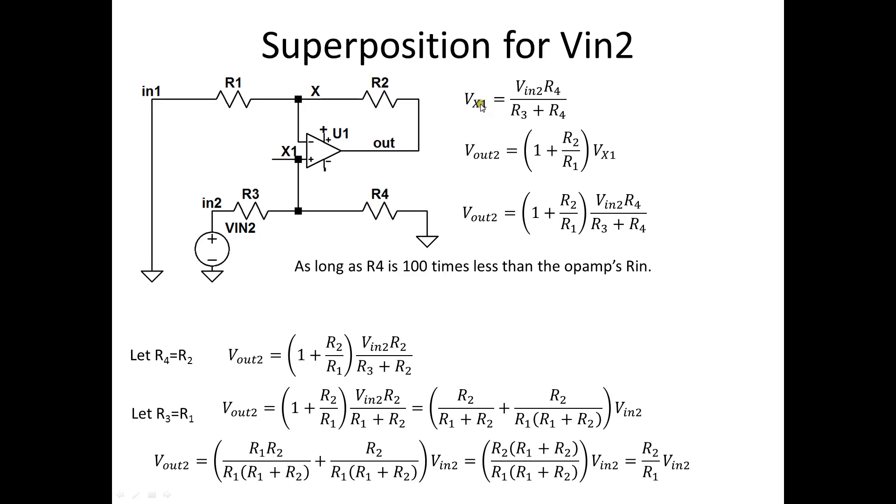Alright, now we'll do superposition for VN2. Looks slightly more complicated. But again, at this node voltage, it's just the voltage division. R4 divided by R3 plus R4. And so, Vout is just 1 plus R2 divided by R1 times the voltage at that node. And so, when we substitute VX into Vout, we get this full equation. Now, this works as long as this R4 is 100 times less than the Rin of the op amp.